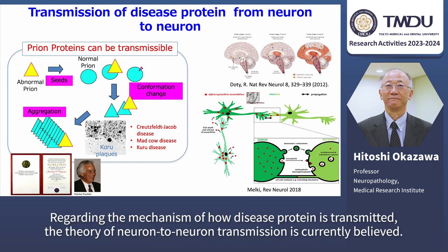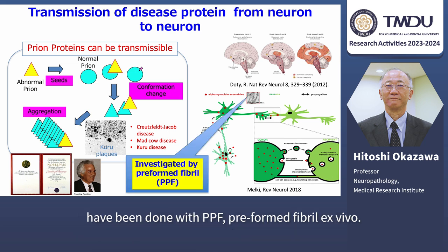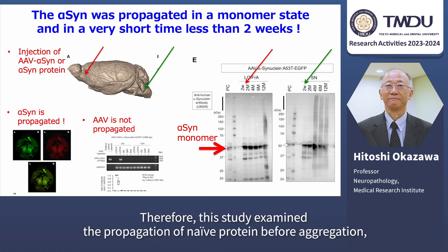Regarding the mechanism of how disease protein is transmitted, the theory of neuron-to-neuron transmission is currently believed. However, the problem is almost all of the experiments supporting the neuron-to-neuron transmission theory have been done with PFF, preformed fibrils, ex vivo. Therefore,